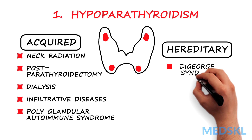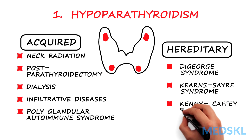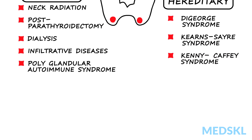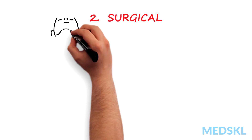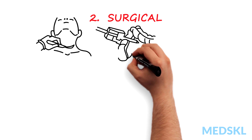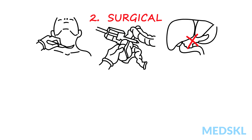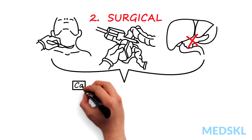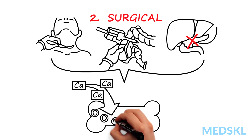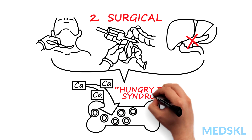Hereditary causes include DiGeorge, Kearns-Sayre, and Kenny-Caffey syndromes. Surgical correction of hyperparathyroidism, extensive bowel resection, and removal of the pancreas may lead to rapid bone remodeling and osteoblastic activity that outstrips the rate of osteoclastic activity. This is called hungry bone syndrome.